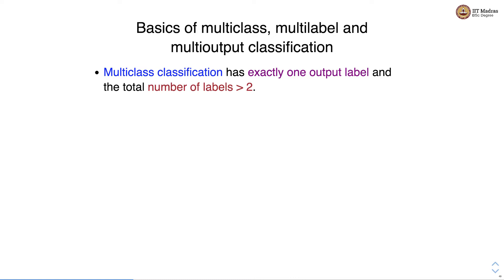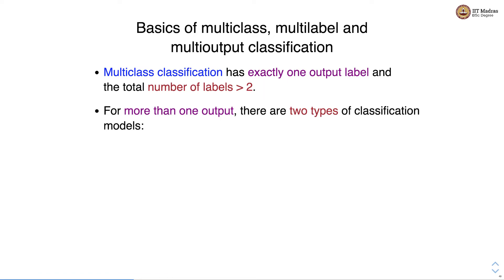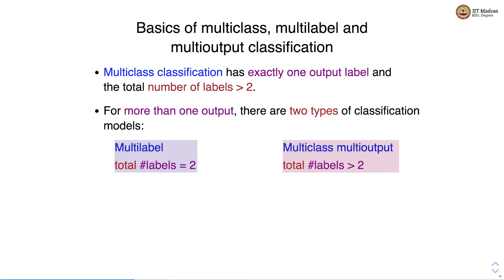There are three different types of setups in multi-learning settings. The first one is multi-class classification, which has exactly one output label and the total number of labels is greater than two. For more than one output there are two types of classification model: multi-label and multi-output. In multi-label, the total number of labels is equal to two and there are more than one label per example. In multi-class multi-output, we have more than one output label and the total number of labels is greater than two.